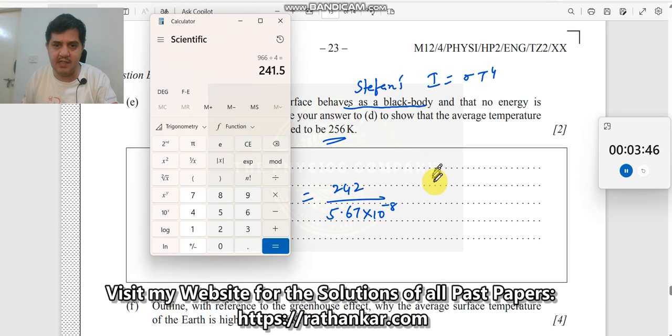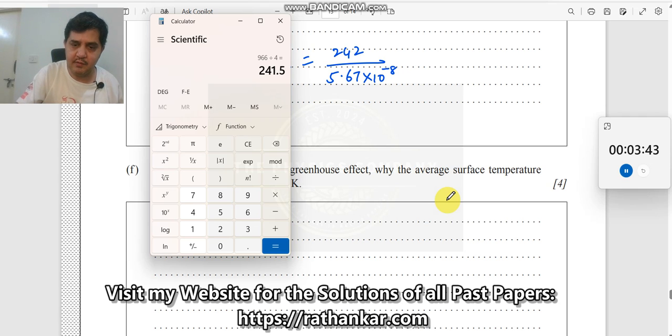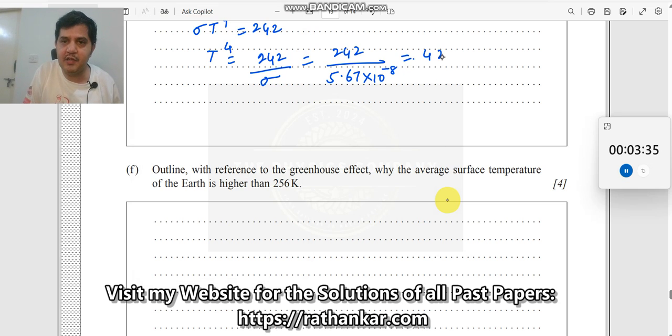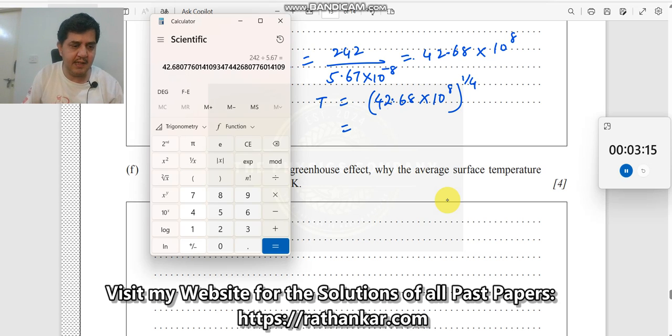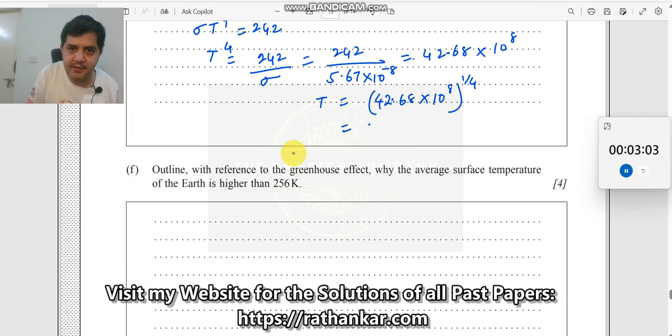When I do this, take my calculator. 242 divided by 5.67 comes out to be around 42.68. I need the value of T and there is a 10 power minus 8. When it goes upwards, it becomes 10 power plus 8. So 42.68 into 10 to the power of 8, all to the power of 1 fourth. Let me use my calculator. 42.68 to the power of 0.25, I get the answer 2.55. This also applies for 10 power 8 - 10 power 8 all to the power of 1 by 4 will be 10 square. Thus, the answer should be 255 Kelvin.